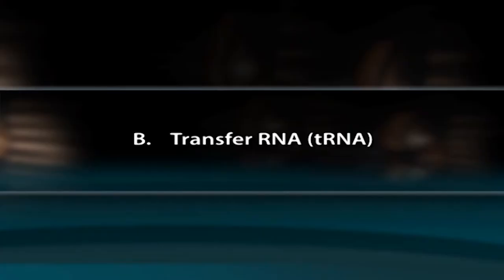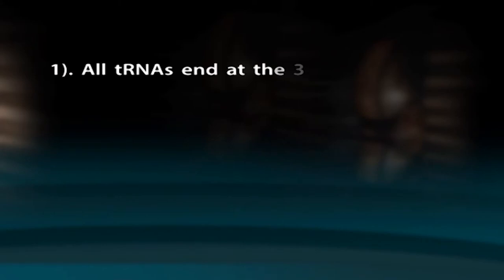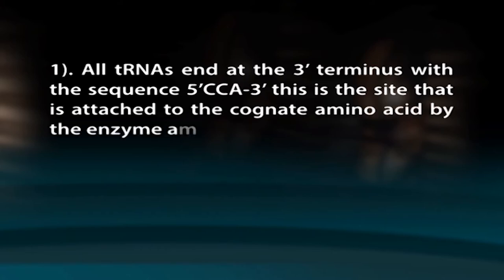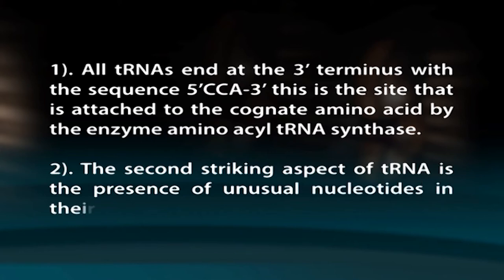Transfer RNA (tRNA) was originally called adapter RNA. For each amino acid there is one or more specific tRNA. All tRNAs serve to transfer amino acids to the ribosome and facilitate the incorporation of amino acids into newly synthesized proteins in a template-dependent manner. All tRNA molecules share certain features in common: all tRNAs end at the 3' terminus with the sequence 5'-CCA-3', which is the site attached to the cognate amino acid by the enzyme aminoacyl tRNA synthetase. tRNAs also contain unusual modified nucleotides in their primary structure that are helpful for increased tRNA function.